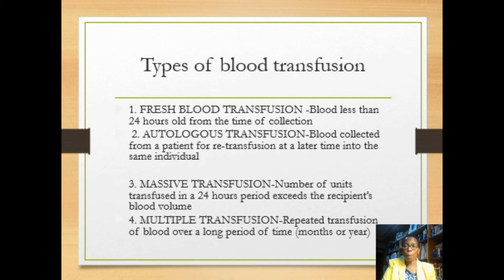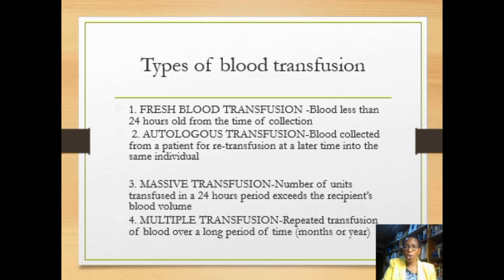We may also have massive blood transfusion, when a person is transfused with so much blood that it exceeds their own blood volume within 24 hours — as in a massive accident or continuous bleeding. Multiple transfusion, on the other hand, is simply repeated transfusion over a long period of time, which happens in patients with chronic diseases predisposing them to blood loss, such as chronic anemia or hemophilia where clotting factors are deficient.